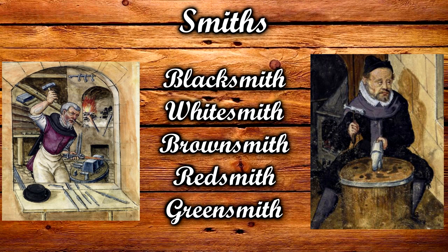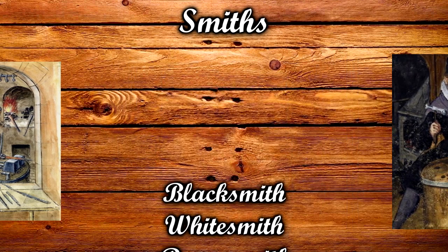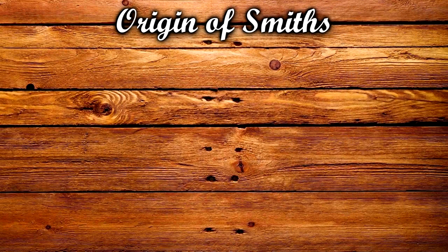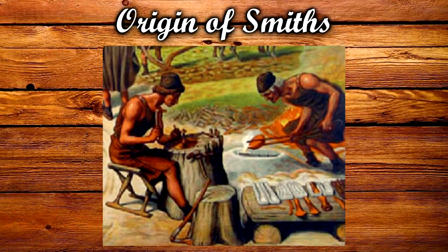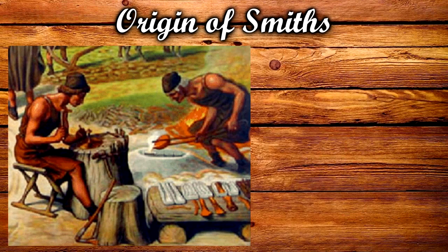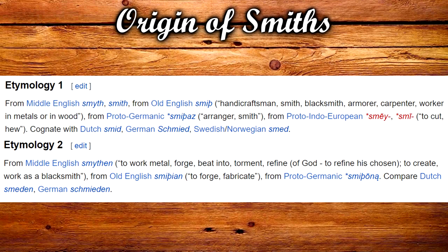For example: blacksmith, whitesmith, redsmith, brownsmith. But first I'll cover the meaning of the general smith. Since the earliest times of metallurgy, the smith has been a very important person in society, and thus the word smith has a very ancient origin. I will put the etymology on screen right now — as you can see, we can date the origins of the word smith in English all the way back to proto-Germanic, again showing that this profession has been around for a really long time.